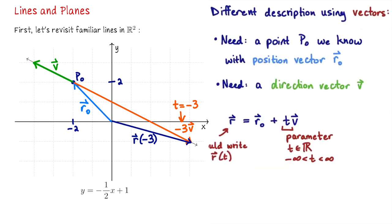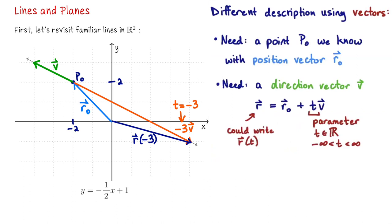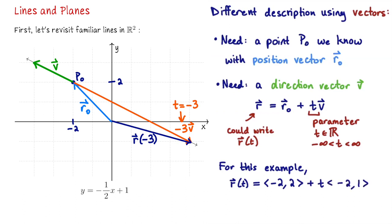So for this example, the vector parametric equation of the line passing through the point (-2, 2) with direction vector v = (-2, 1) is: r(t) = (-2, 2) + t(-2, 1). I can simplify the right-hand side and add coordinate by coordinate, giving (-2 - 2t, 2 + t). This is a parametric equation for the line y = -½x + 1. For different values of t, we get the position vector pointing to points on this line.